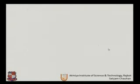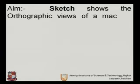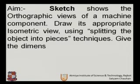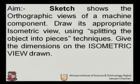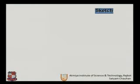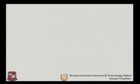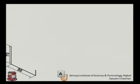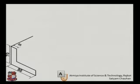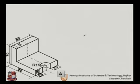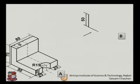Let us take one more example. The problem asks to sketch the orthographic view of a machine component and draw its isometric view using the splitting-the-object-into-pieces technique. As we have seen before, we split the component into parts. In this case, we have split the parts into A and B.